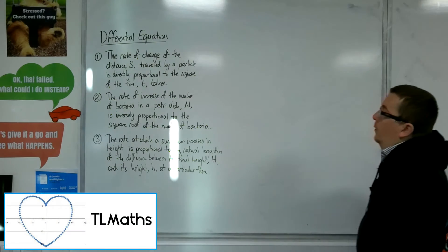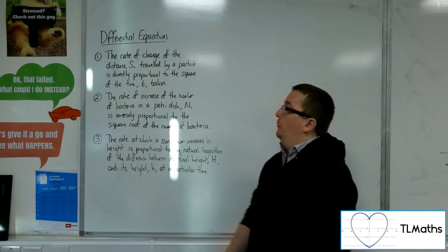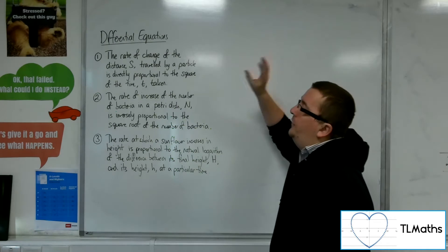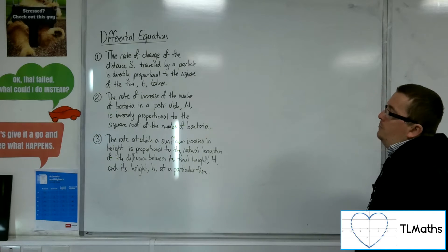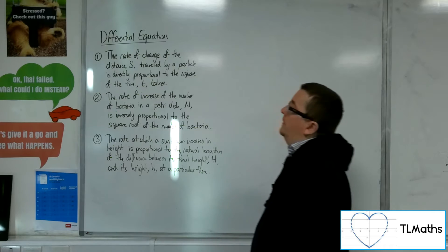So here are three worded problems, and what I need to do is find the differential equation that goes with them. So for the first one, the rate of change of the distance s travelled by a particle is directly proportional to the square of the time t taken.